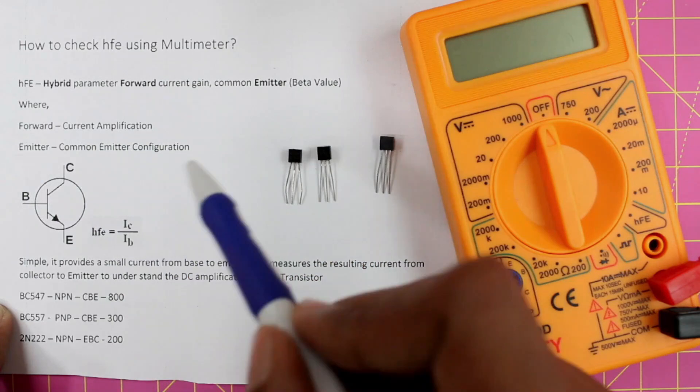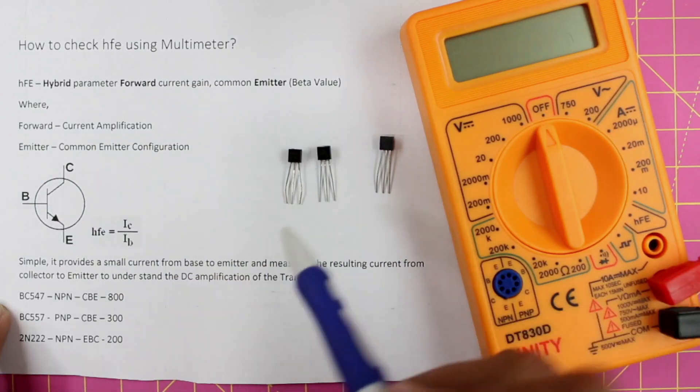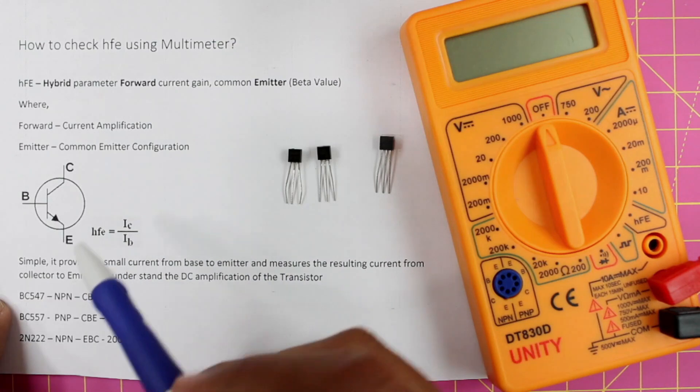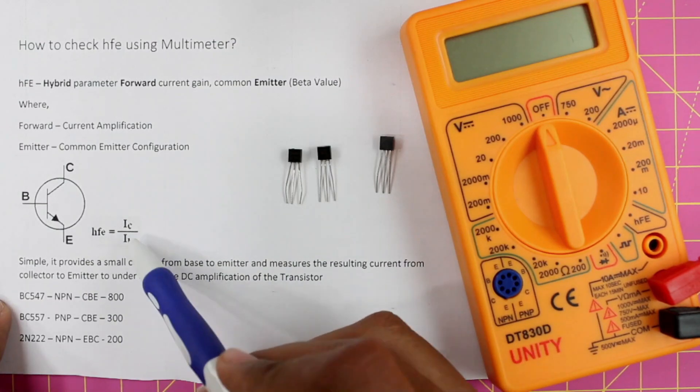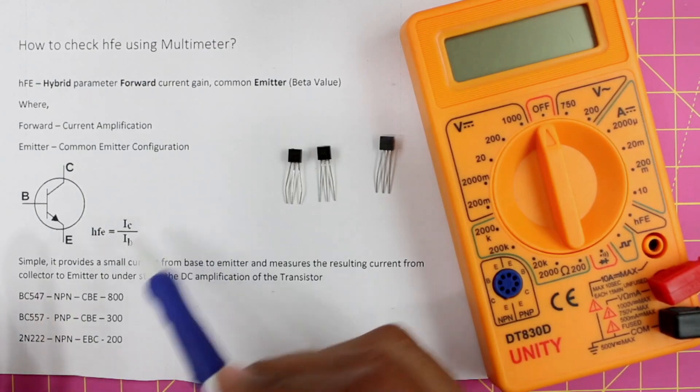Now HFE is also called the current gain of a transistor or beta value of a transistor, and it can be given by the formula collector current divided by base current. To give a much simpler perspective, it is nothing but we are going to pass a small current from the base of the transistor to the emitter.